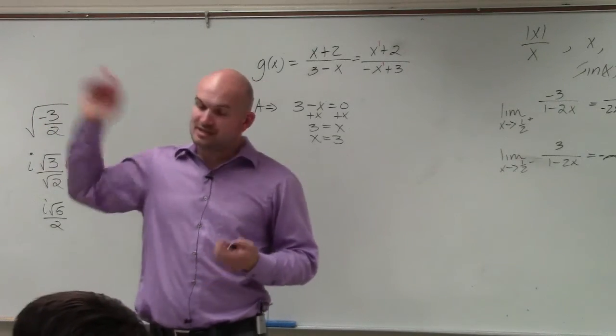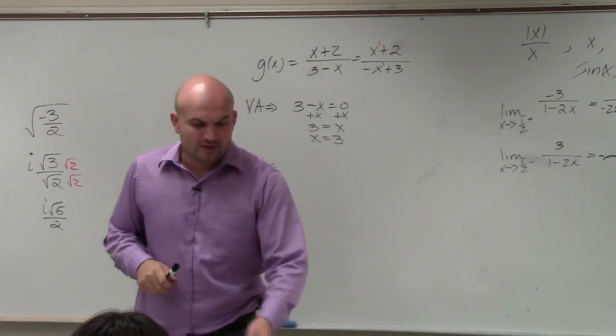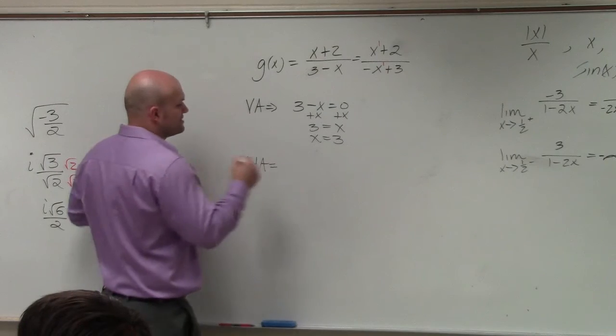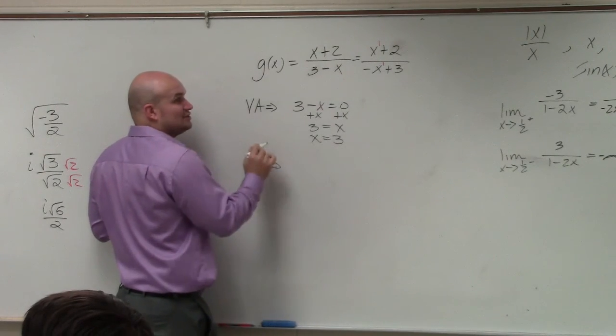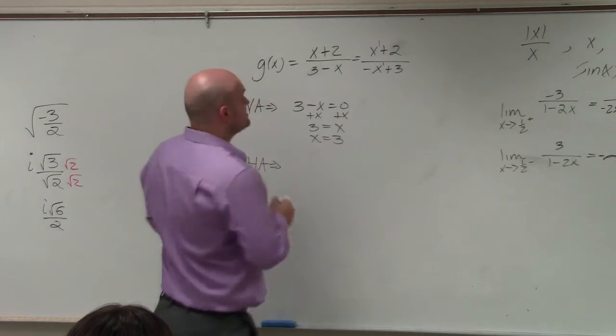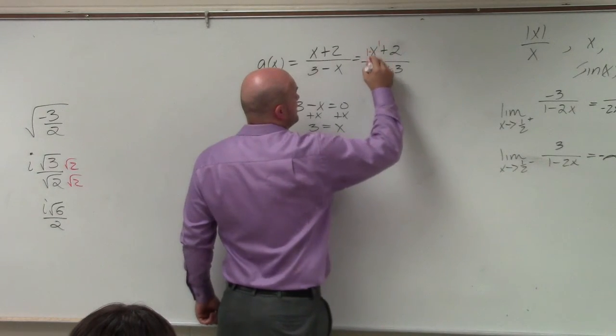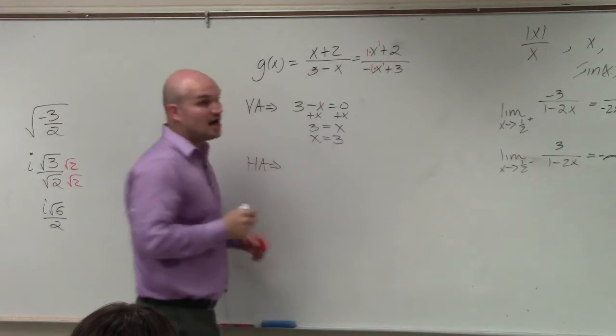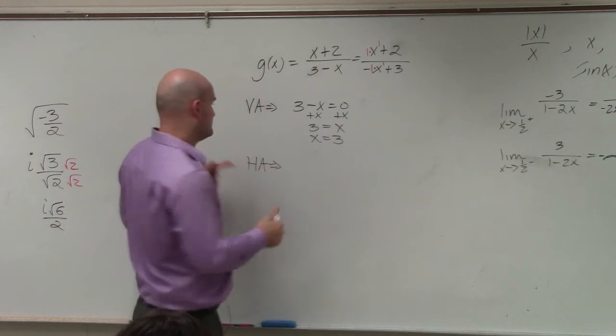If you guys remember from the notes that I had you guys write down last class period, when the degrees are exactly the same, the horizontal asymptote is just the ratio of the leading coefficient of the numerator divided by the leading coefficient of the denominator.